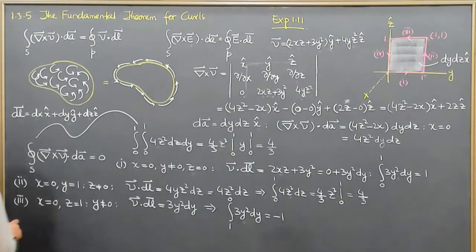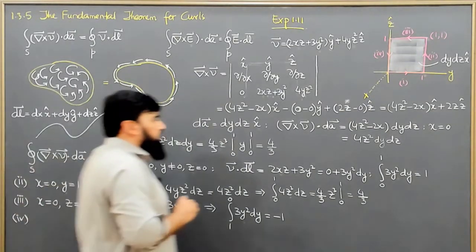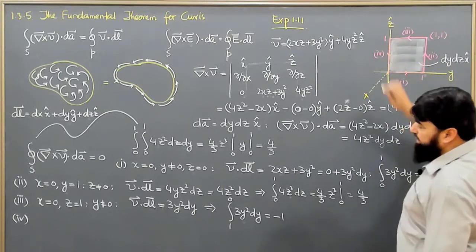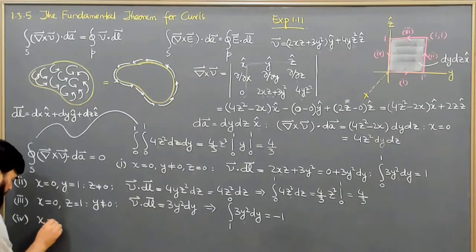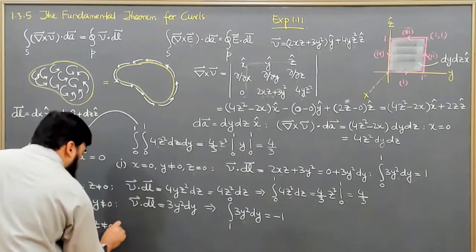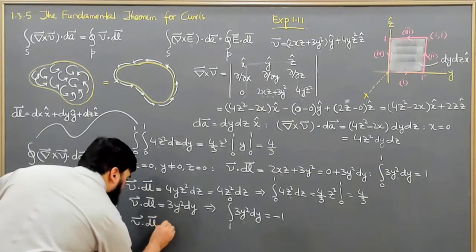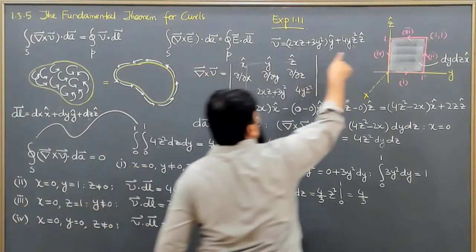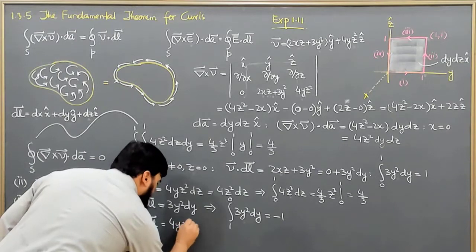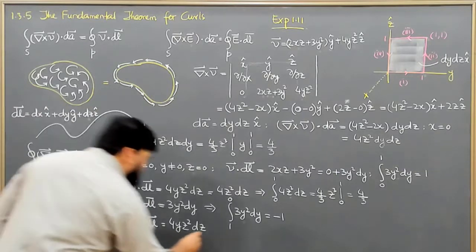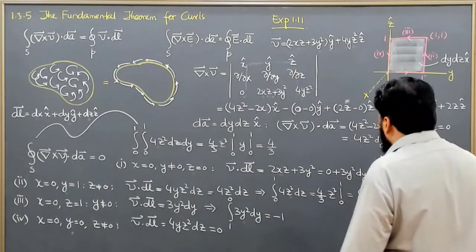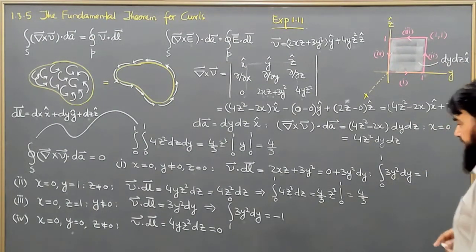On the fourth line, z is changing while x and y are both equal to 0. Only the dz component is retained, and v dot dl gives us 4yz squared dz. But since y equals 0, this entire expression equals 0 and its integral will also be equal to 0.